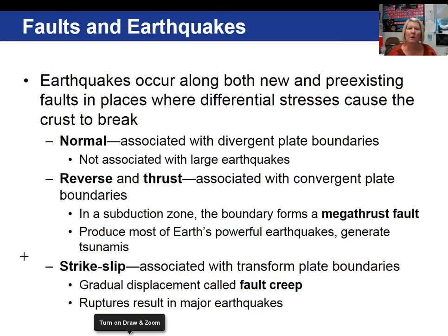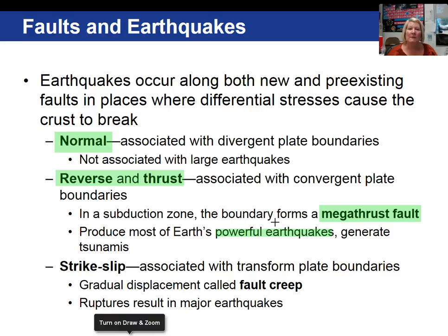Earthquakes occur along pre-existing faults as well as in new places where differential stresses cause the crust to break. We're going to define three types of dip-slip faults. First, normal faults are associated with divergent plate boundaries and generally not associated with large earthquakes. Reverse and thrust faults are associated with convergent plate boundaries and produce some of the most powerful earthquakes on earth. In a subduction zone, the boundary forms what we refer to as a megathrust fault, and when this breaks, tremendous amounts of energy are released. Third, strike-slip faults are generally associated with transform plate boundaries; displacement is usually gradual, but ruptures can result in major earthquakes.